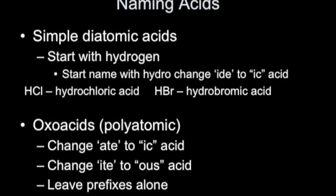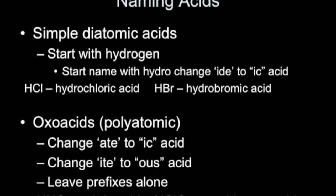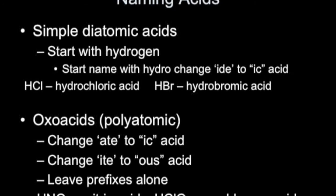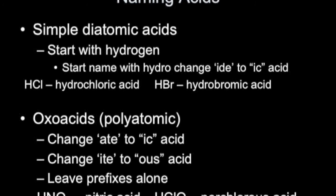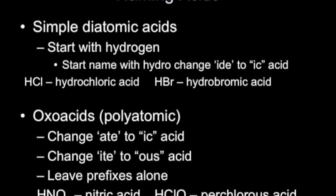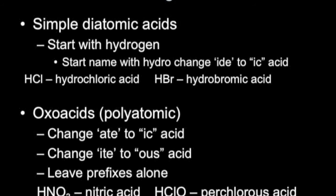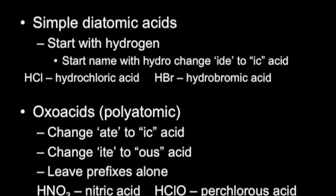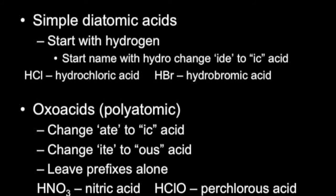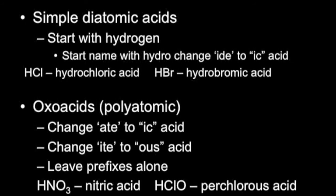Oxo acids — the polyatomics — are more involved. If the polyatomic ion name ends in '-ate,' we change that ending to '-ic acid.' If it ends in '-ite,' we change that to '-ous acid.' Any prefixes present are left alone. For example, HNO3: the NO3 is the nitrate polyatomic ion, so '-ate' turns to '-ic,' and this becomes nitric acid. For HClO, since ClO3 is the '-ate' ion and this has two fewer oxygens, it is the chlorite ion; with hydrogen in front, this becomes chlorous acid. Following these rules, we can name a whole variety of polyatomic ions and acids.